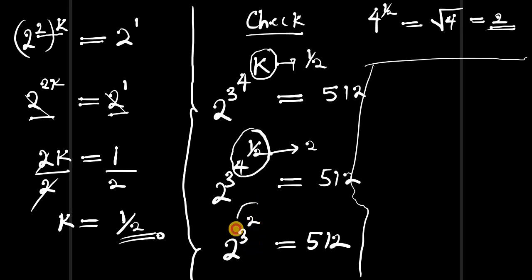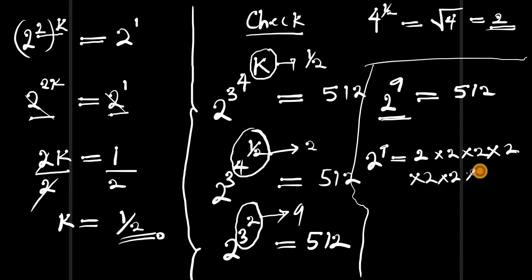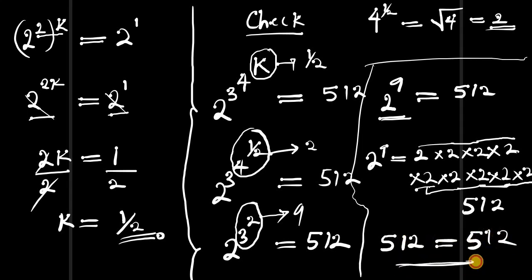Continuing the verification: 3^2 is simply 3 times 3, which is 9. So we have 2^9, and this should equal 512. Indeed, 2^9 equals 2 multiplied by itself 9 times, which equals 512. So this is absolutely correct!